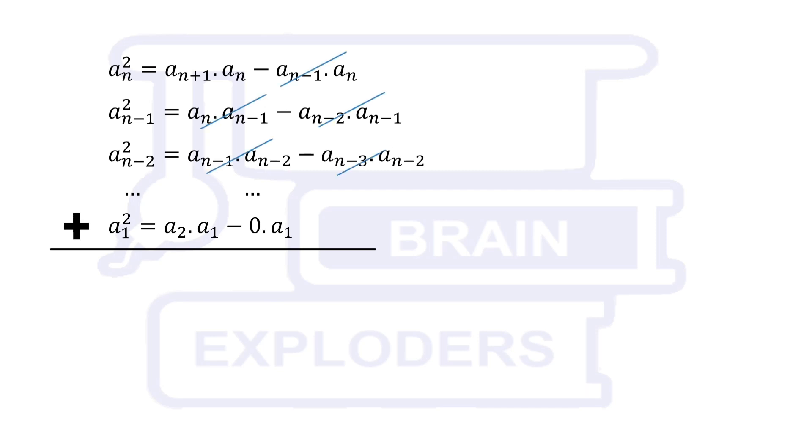Writing this expression for all Fibonacci numbers from 1 to an and adding, we find that sum of squares of first n Fibonacci numbers is an plus 1 times an. Let's check this relation for first few terms. 1 squared plus 1 squared is equal to 1 times 2. 1 squared plus 1 squared plus 2 squared is 2 times 3.